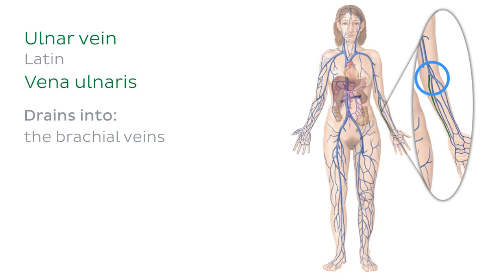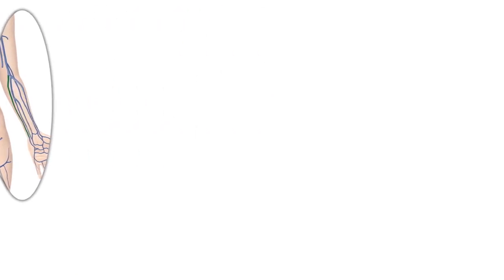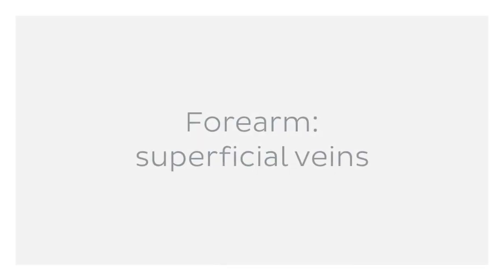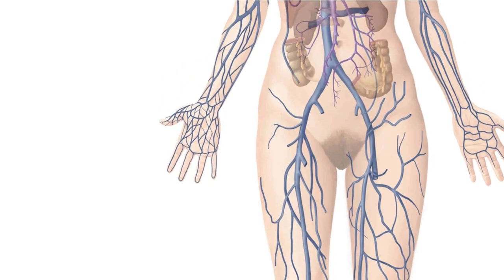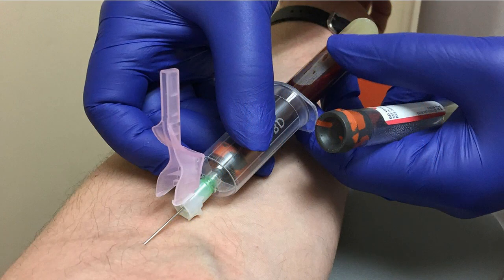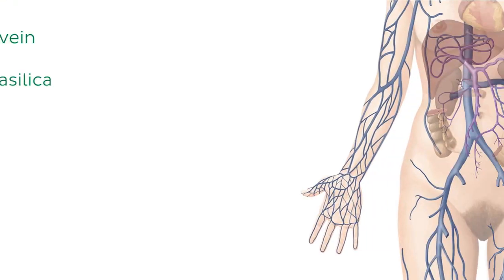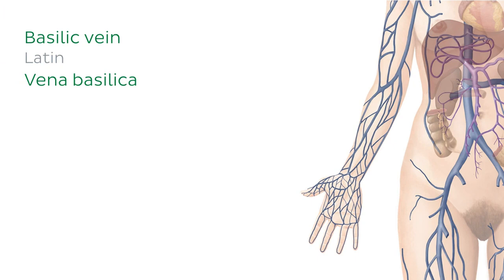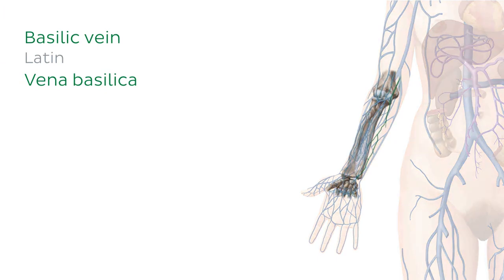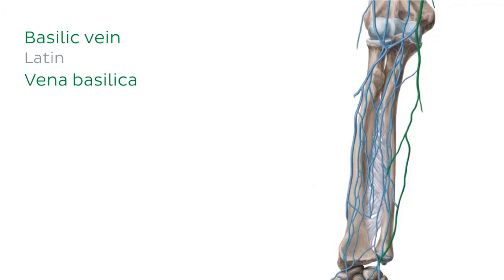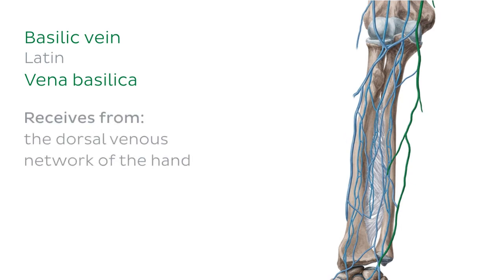Before travelling further up, let's look at the superficial veins of the forearm, which are close enough to the skin's surface to be visible on your own arm — making them a great site for venipuncture. First, the basilic vein, which runs up the ulnar side of the forearm — that is, the inner side from our view. The basilic vein helps drain the dorsal venous network of the hand and travels further up the arm, terminating when it opens into the brachial vein.